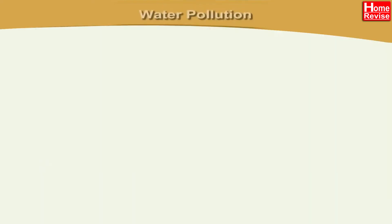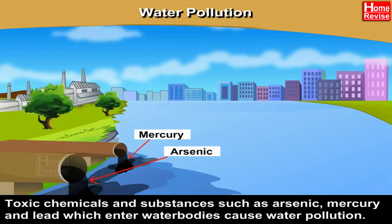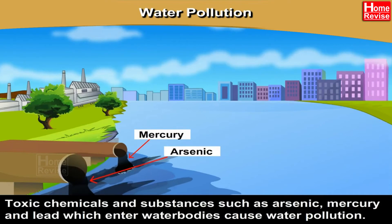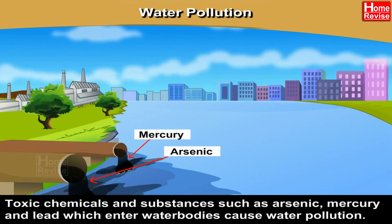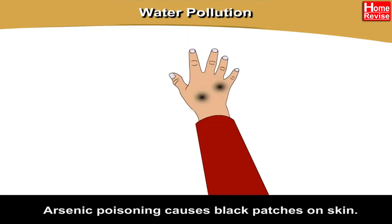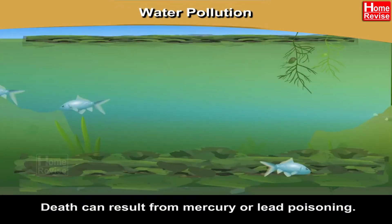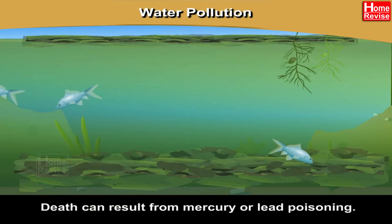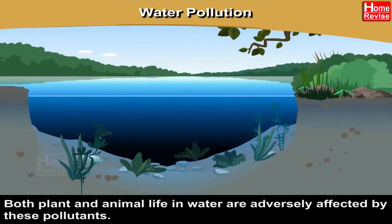Water Pollution: Toxic chemicals and substances such as arsenic, mercury, and lead, which enter water bodies, cause water pollution. Arsenic poisoning causes black patches on skin. Death can result from mercury or lead poisoning. Both plant and animal life in water are adversely affected by these pollutants.